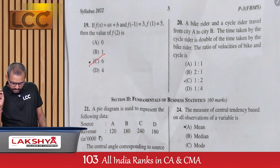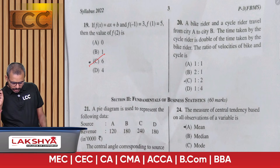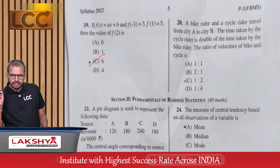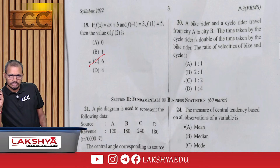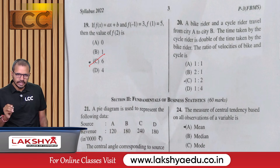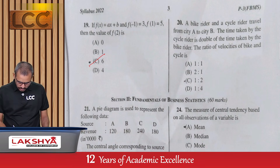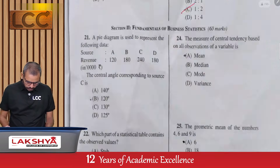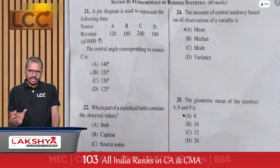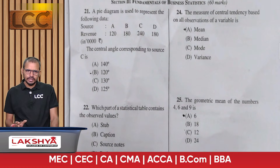Question 20: A bike rider and a cycle rider travel from city A to city B. The time taken by the cycle rider is double the time taken by the bike rider. Find the ratio of their velocities — option C. Now entering the statistics part.